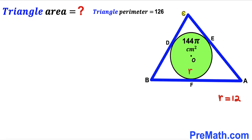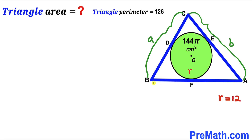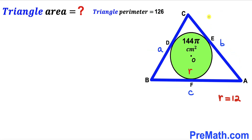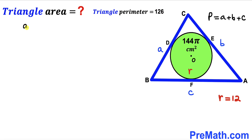Now we are going to focus on this blue triangle. I'm going to label the side lengths as lowercase a, lowercase b, and lowercase c. The perimeter of this blue triangle is the sum of all side lengths: a + b + c. We know the triangle perimeter equals 126, so a + b + c = 126 centimeter. I'll label this as equation number one.